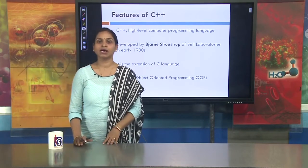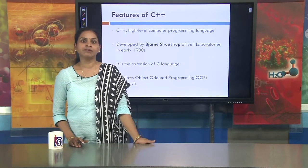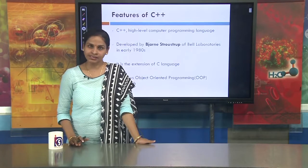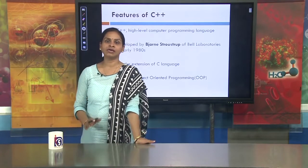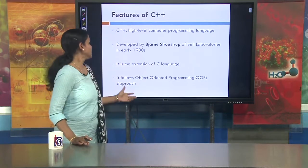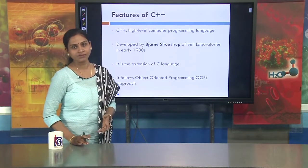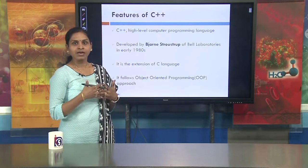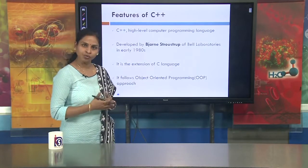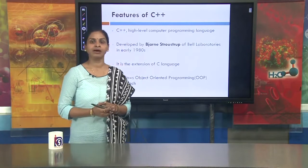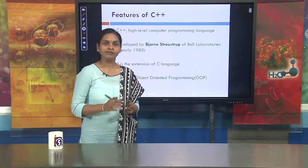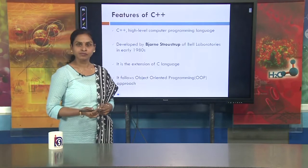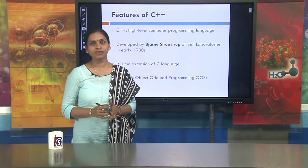C++ is a high level programming language. It is developed by Bjarne Stroustrup at Bell Laboratories in the early 1980s. C++ is the extension of C language, and C++ is based on OOPs concepts — it follows the object oriented programming approach. We will discuss what is the object oriented approach, but first we will have a basic idea of C++.